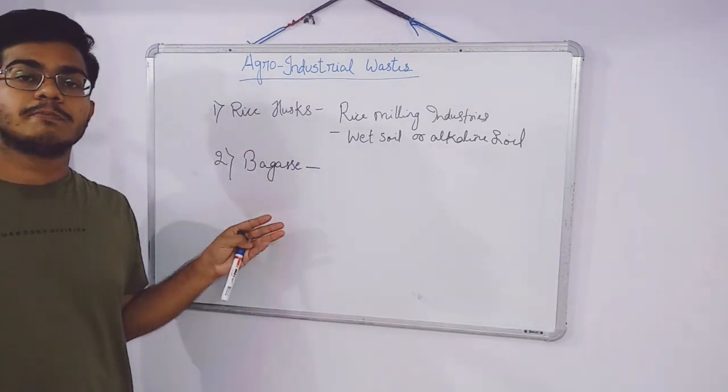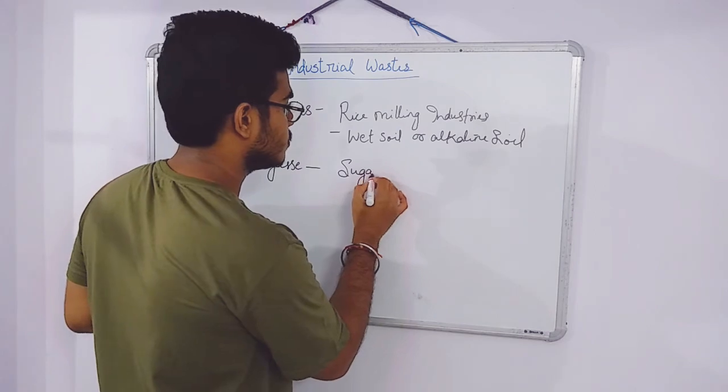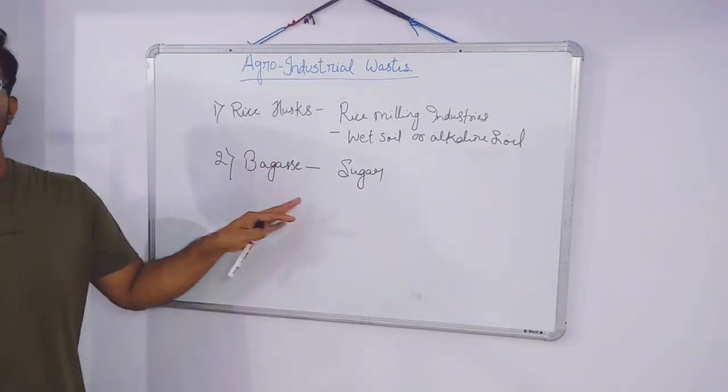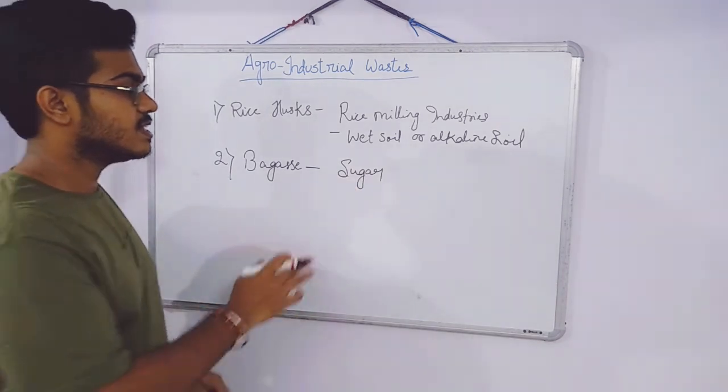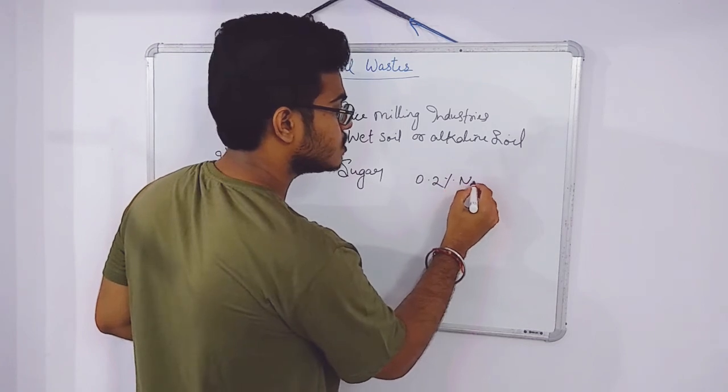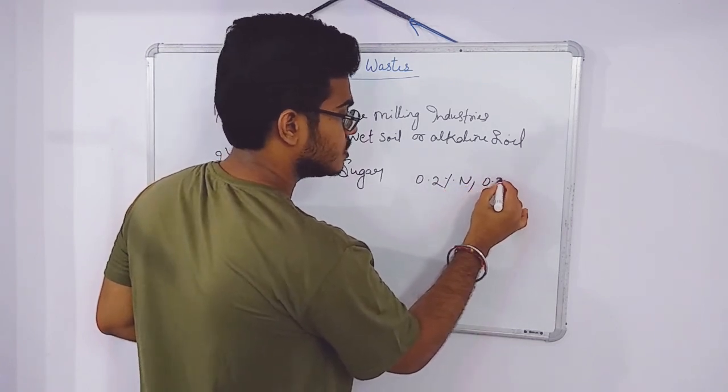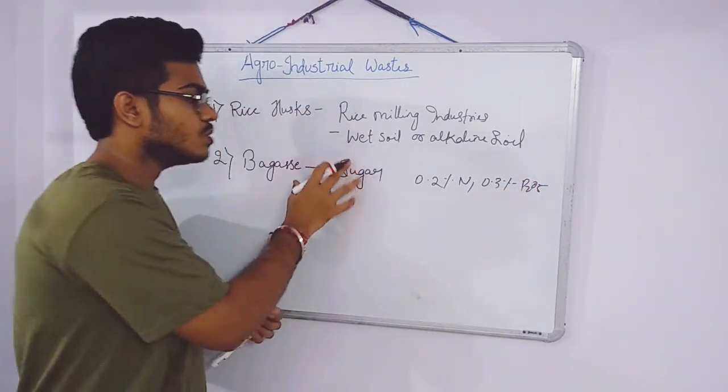Bagasse is obtained from the byproduct of sugar processing. This contains about 0 to 0.2% of nitrogen and 0.3% of P2O5.